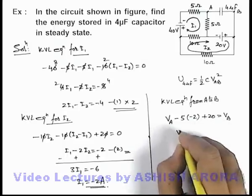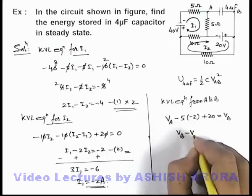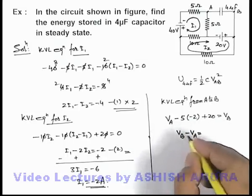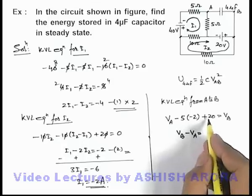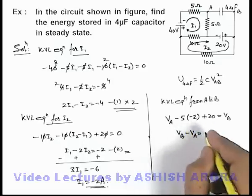So here you can see the value of potential difference Vb minus Va we are getting is 20 plus 10, that will be 30 volt.